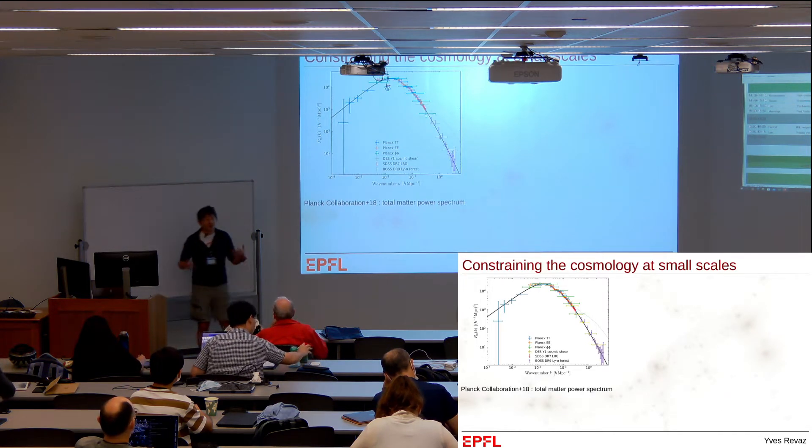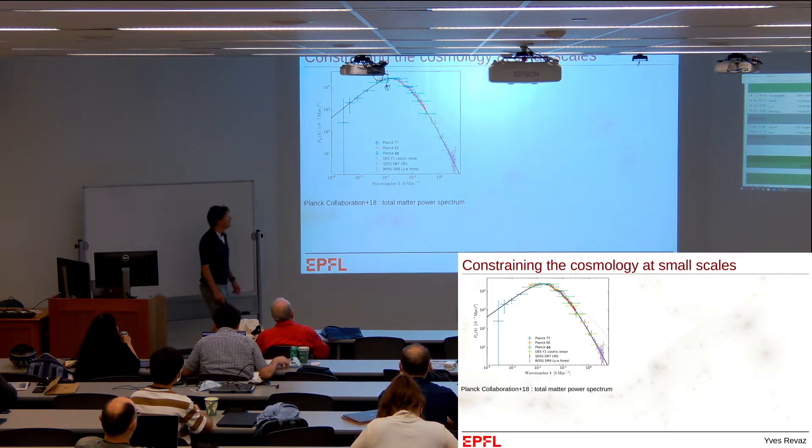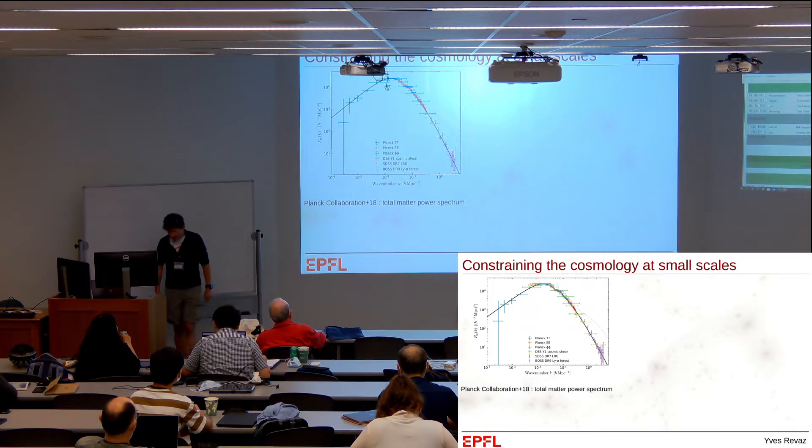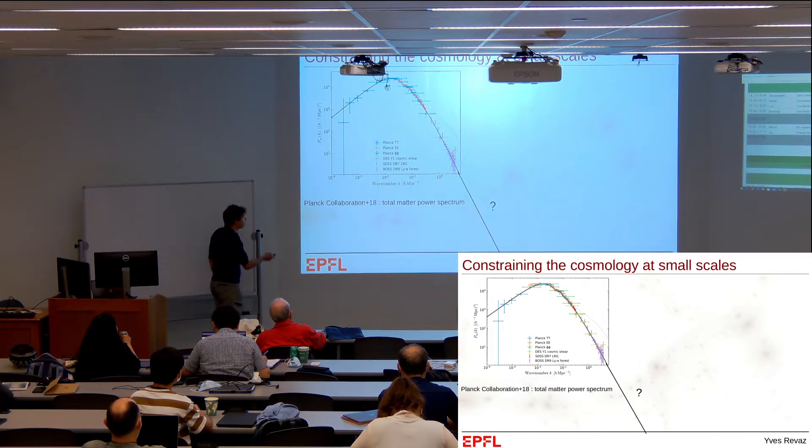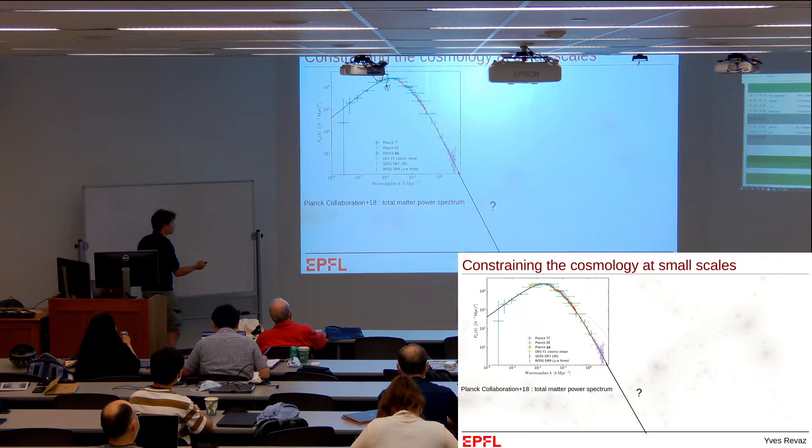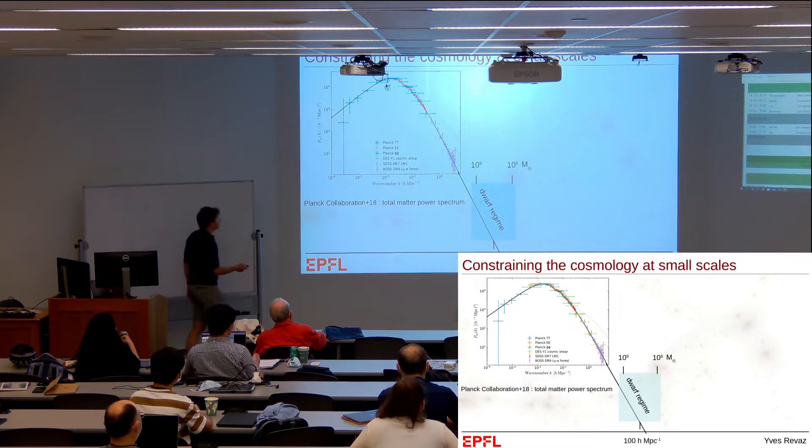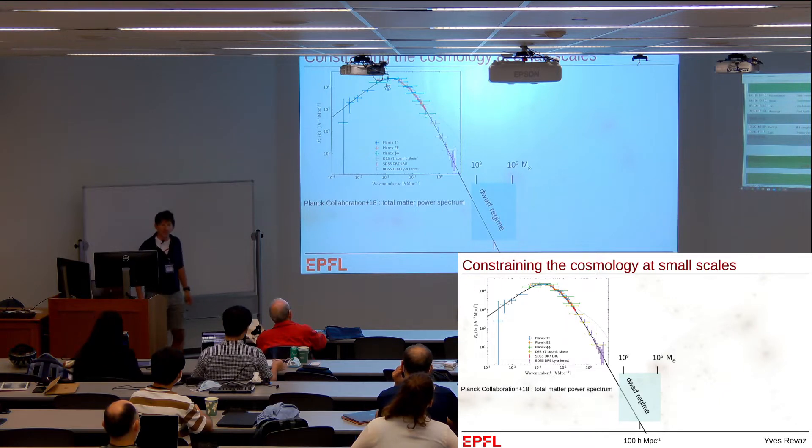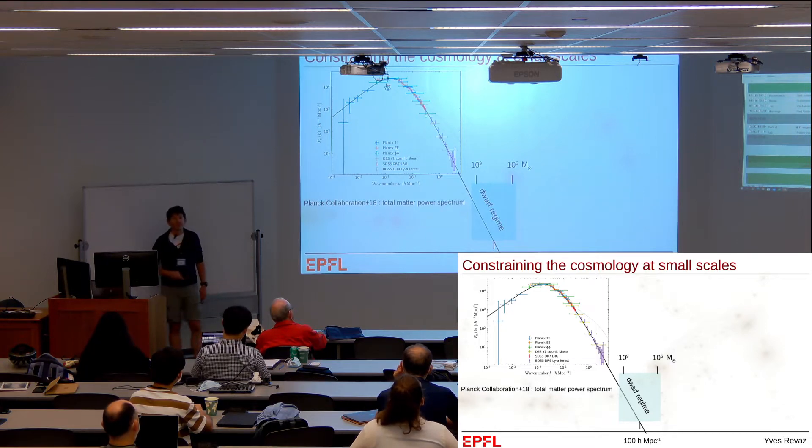Dwarf galaxies are small objects that may be useful to constrain the small scales of the universe. Looking at the total matter power spectrum, you see many constraints. However, if you go to very small scales, we have no idea about the shape. If you turn the wave number to halo mass, this is exactly what will impact the dwarf regime, between 10 to the 6 and 10 to the 9.